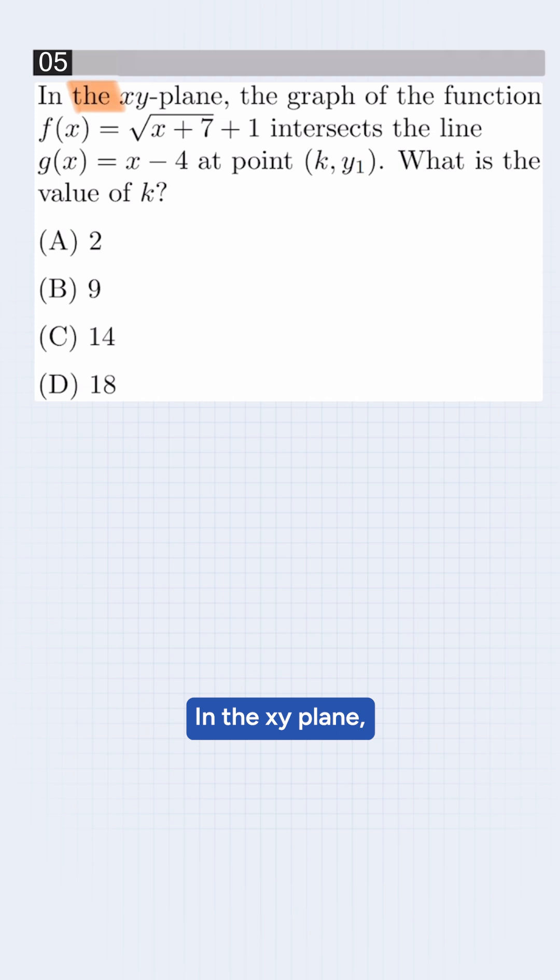The question says, in the xy-plane, the graph of the function f(x) = √(x+7)+1 intersects the line g(x) = x-4 at point (k, y₁). So what is the value of k?